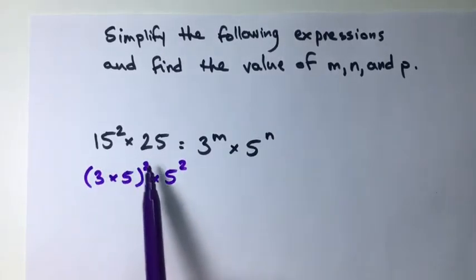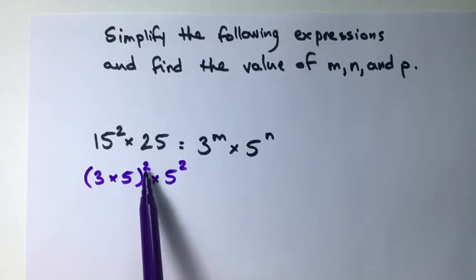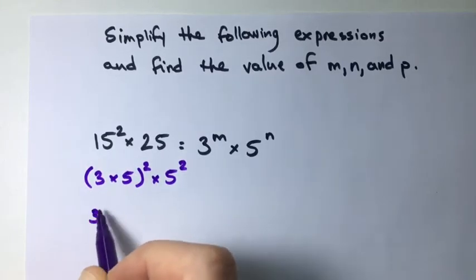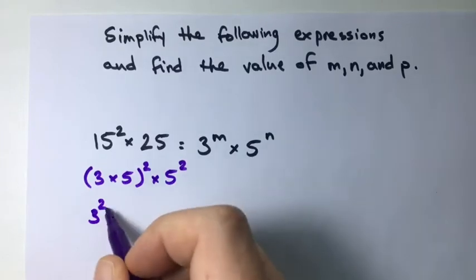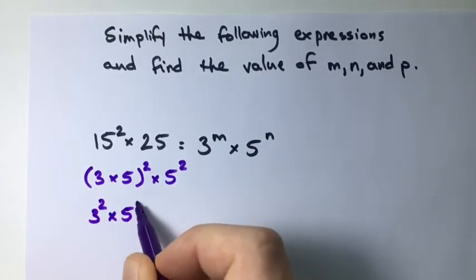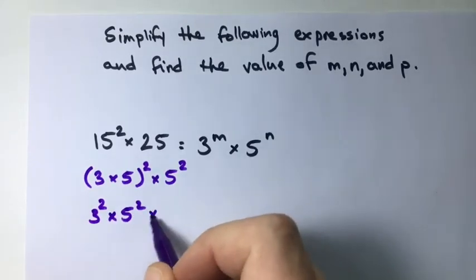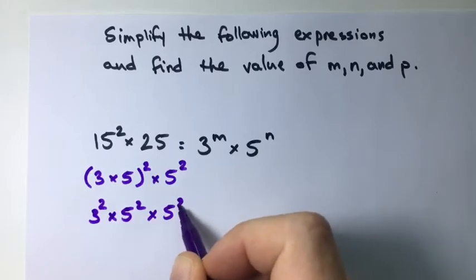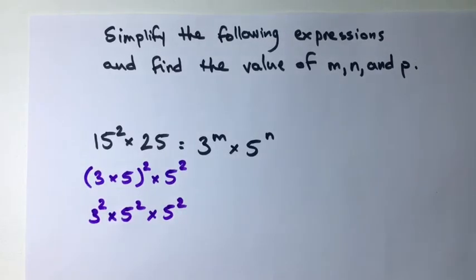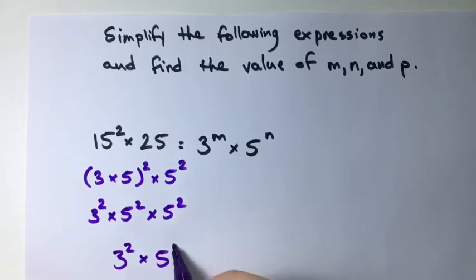Now, if we distribute our power here, we have 3 squared times 5 squared times 5 squared. We have the same base here, so we can use the multiplication law of exponents, and we just add our squareds. So this is going to come out to 3 squared times 5 to the power of 4.